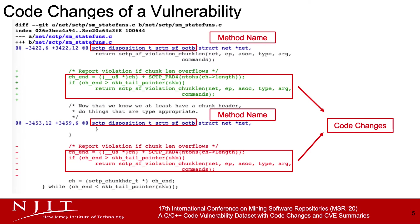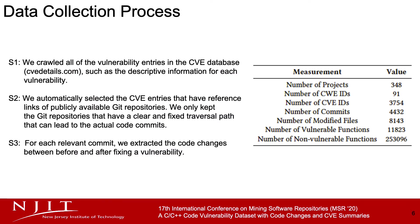Some of the links indicate a fixing commit to the project code repository of the vulnerability. By exploring the code commit links, we can find the code changes used to fix the vulnerability. These code changes are usually involved in a code method. By this exploration, we collect our dataset in the following steps.